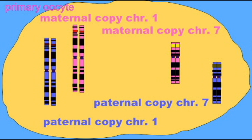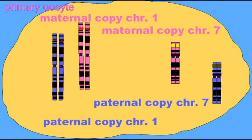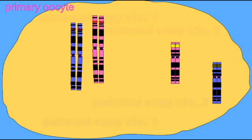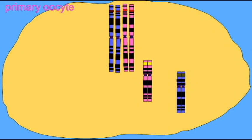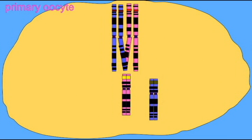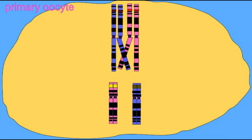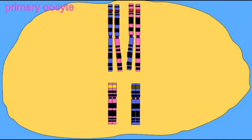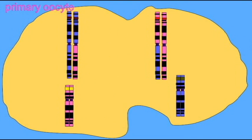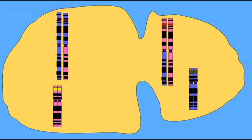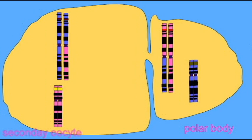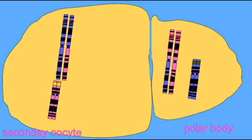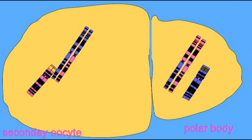During oogenesis, the primary oocyte undergoes independent assortment and crossing over in prophase I. The primary oocyte does not divide equally. It produces only one secondary oocyte and then a smaller cell known as a polar body.